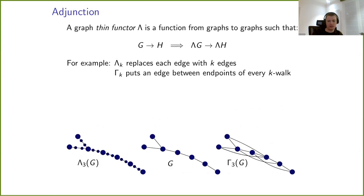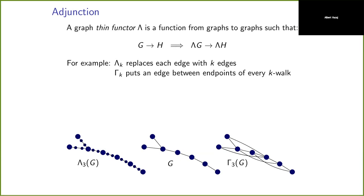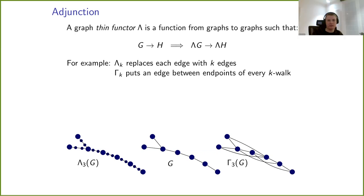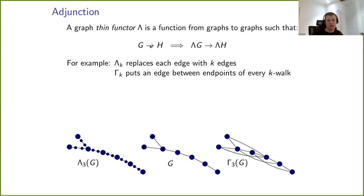For the second part of the talk, I want to discuss adjunctions. A thin functor is a construction — a function from graphs to graphs — such that whenever there exists a homomorphism from G to H, this implies a homomorphism from λ(G) to λ(H). 'Thin' just means we only care about existence of homomorphisms, not about compositions or respecting products.